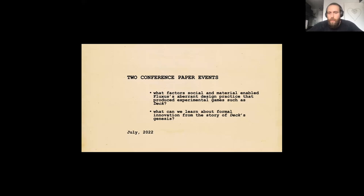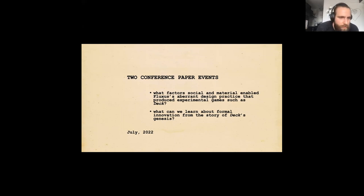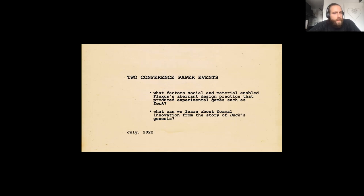This paper is less concerned with the formal innovations themselves than the historical conditions. To rephrase the opening question: what factors, social and material, enabled Fluxus' aberrant game design practice that produced objects such as Deck? My thesis is that experimental games such as Brecht's take a quasi-autonomous infrastructure as their precondition. Thus, Fluxus attests to how radical innovations in game design result not from some lone genius or art building merely on other art, but rather a nexus of community labor that effectively creates the conditions for creativity.